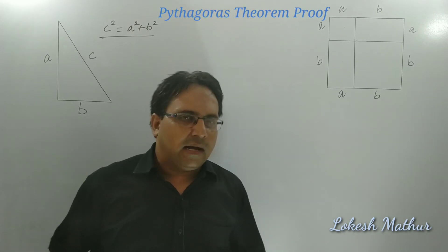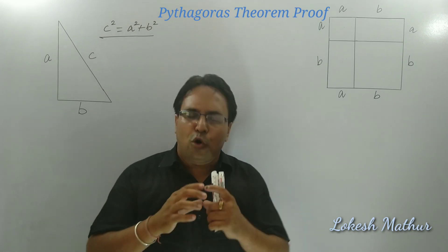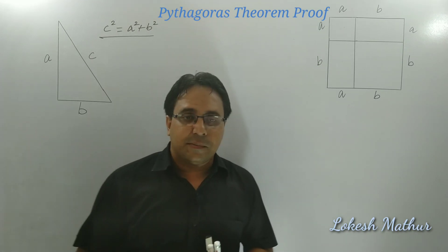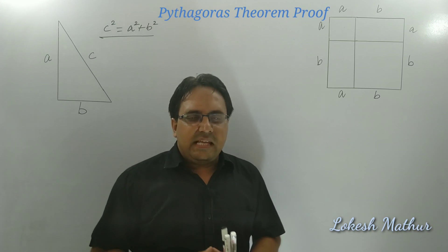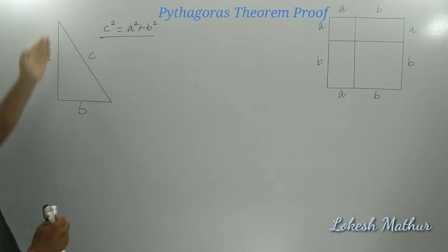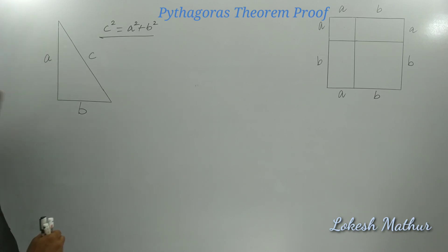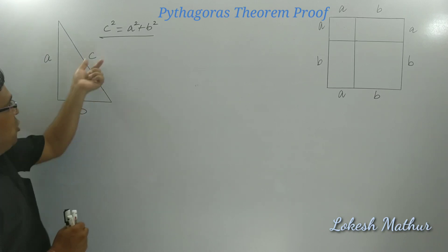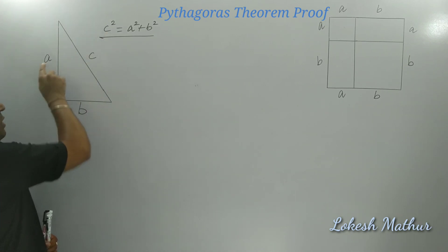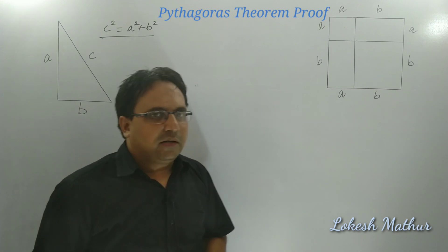We never questioned this theorem because we think that what we are studying is okay. But let us understand — I am going to explain a very simple form of Pythagoras theorem. So let us see how we get Pythagoras theorem. I have taken a right-angled triangle with perpendicular A, base B, and hypotenuse C. And I know that C square is equal to A square plus B square. This is Pythagoras theorem.